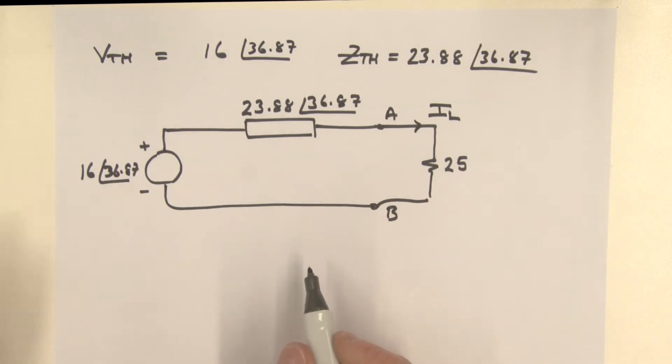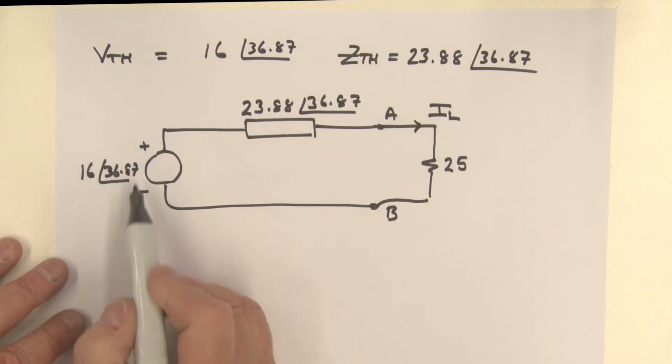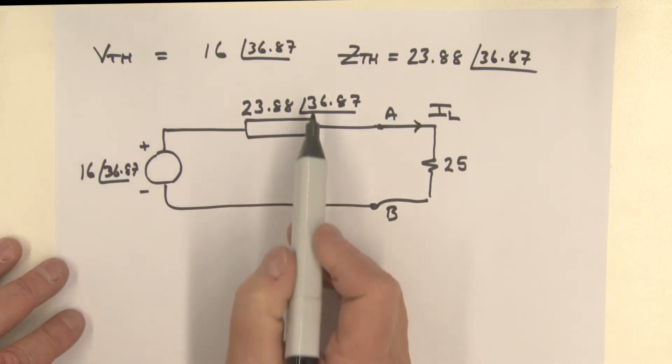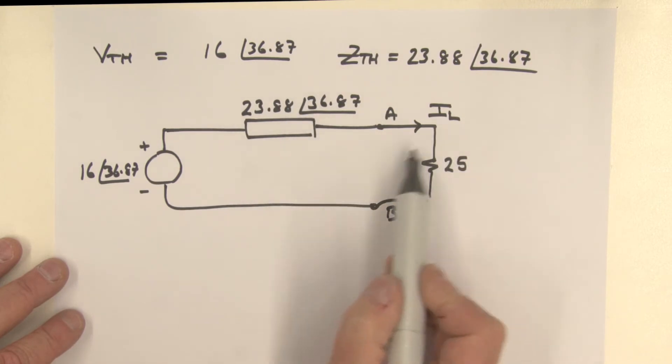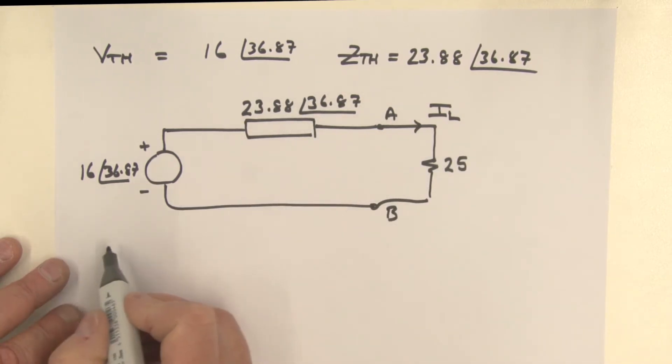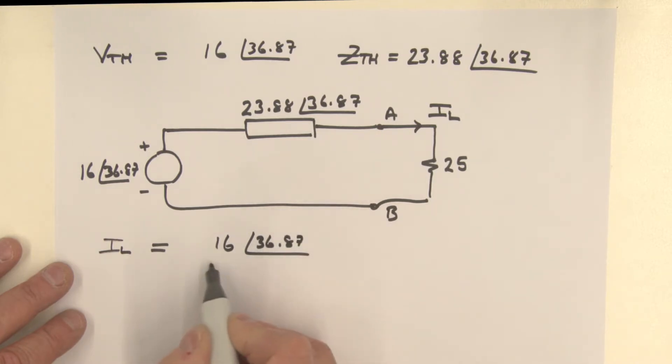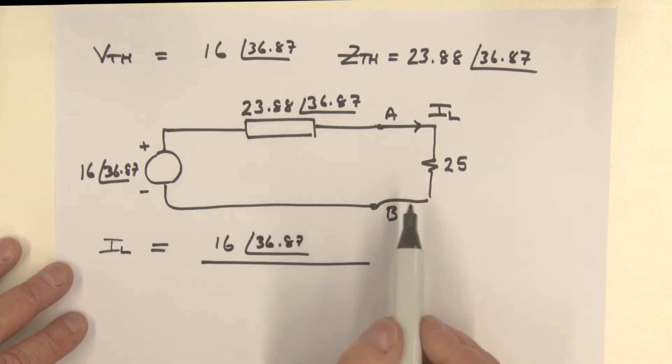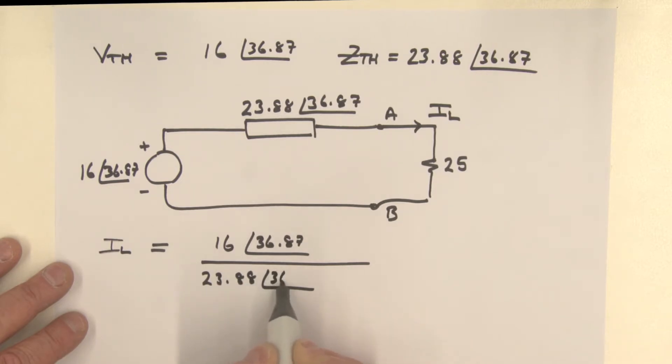I hope that was relatively easy for you. Let's do it together. Load current. So what we've got in our circuit is a voltage equivalent, and this is the impedance, the Thevenin impedance, in series with the load resistance over here. So therefore, that current IL, I for load, is equal to the voltage source, which is 16 at an angle of 36.87, and that's divided by the impedance in the circuit, which is 23.88 at an angle of 36.87 plus that 25 ohm resistor.